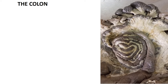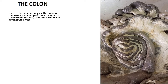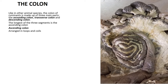The colon of ruminants, like in other animal species, is made up of three main parts: the ascending colon, the transverse colon, and the descending colon. The ascending colon is quite modified in ruminants, similar to the horse and pig, though there are significant differences. The ascending colon is the longest of the three segments and is arranged in loops and coils. It has a proximal loop, a spiral loop, and a distal loop.